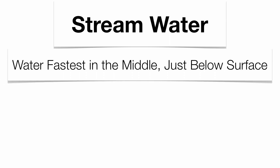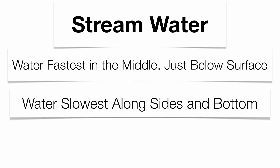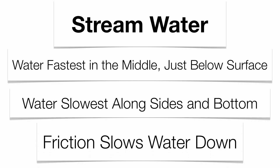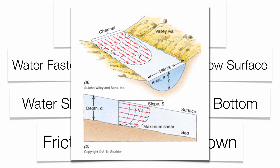Stream water itself has different speeds or velocities based upon its location. Water is definitely going to travel the fastest in the middle, just below the surface, because that's where the least amount of friction is going to be. Water is definitely going to be the slowest along the sides and along the bottom of the stream channel, simply because that's where the most friction is going to be found.